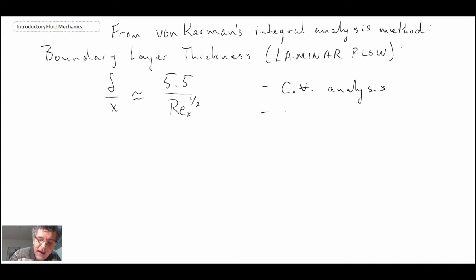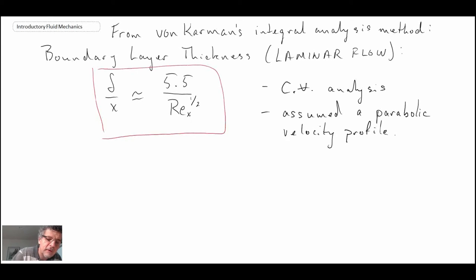He obtained this using control volume analysis, and for laminar flow, assumed a parabolic velocity profile. It was a fairly simple method in terms of the analysis required. So what we're going to do is apply the equation for the boundary layer thickness to an example problem, where we are asked to calculate...